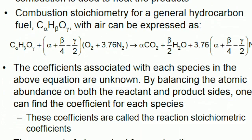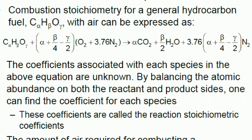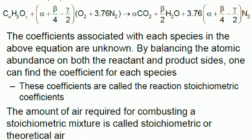Combustion stoichiometry for a general hydrocarbon fuel CₐHᵦOᵧ with air can be expressed as: CₐHᵦOᵧ + (α + β/4 - γ/2)(O₂ + 3.76N₂) → αCO₂ + (β/2)H₂O + 3.76(α + β/4 - γ/2)N₂. The coefficients associated with each species in the above equation are unknown. By balancing the atomic abundance on both the reactant and product sides, one can find the coefficient for each species. These coefficients are called the reaction stoichiometric coefficients.